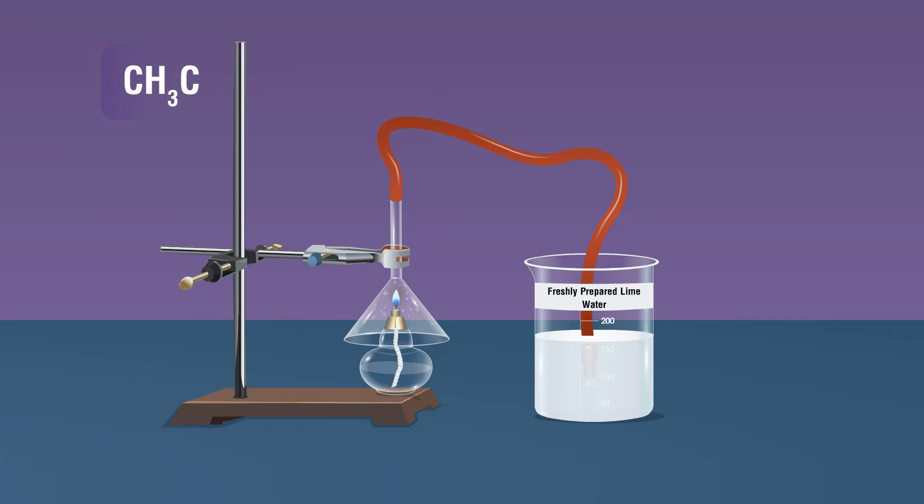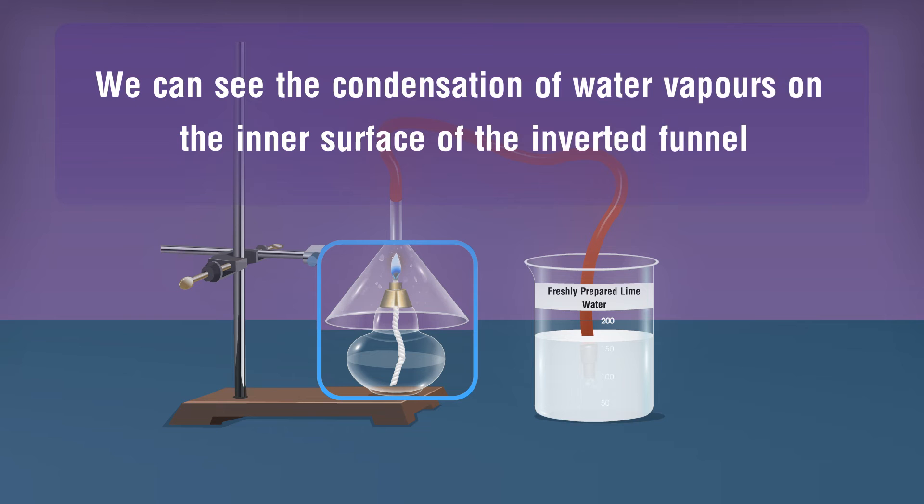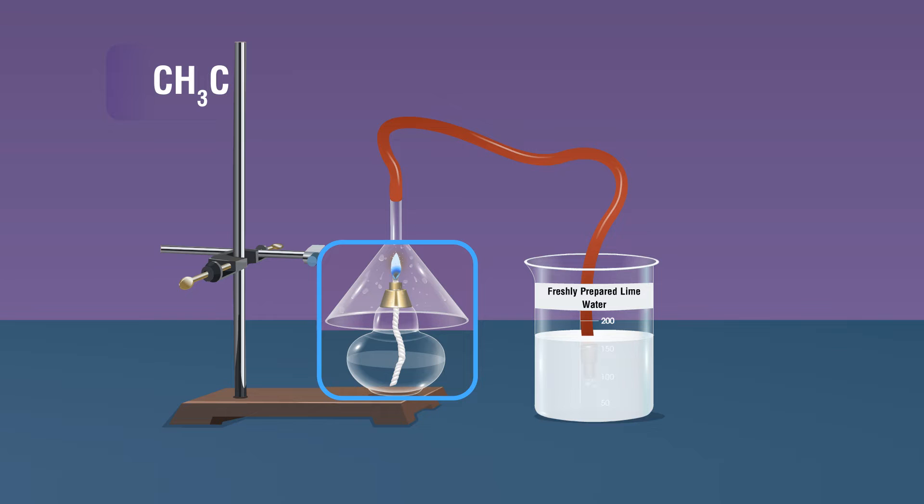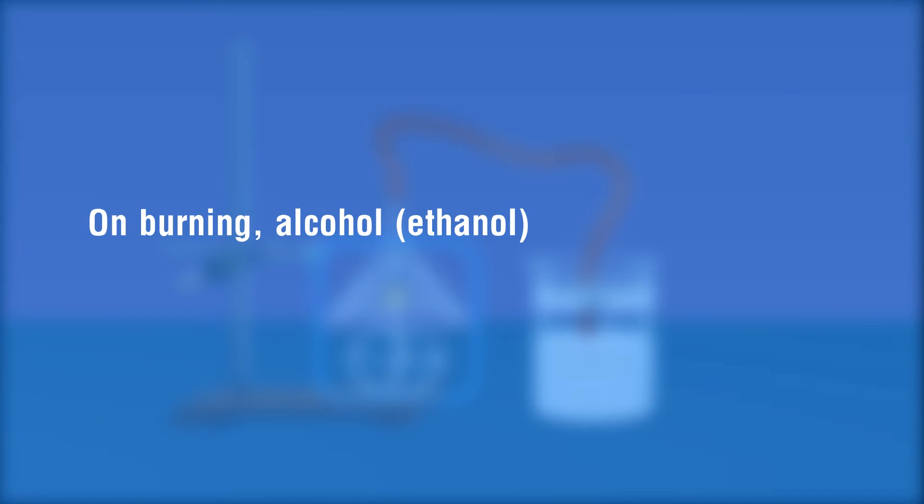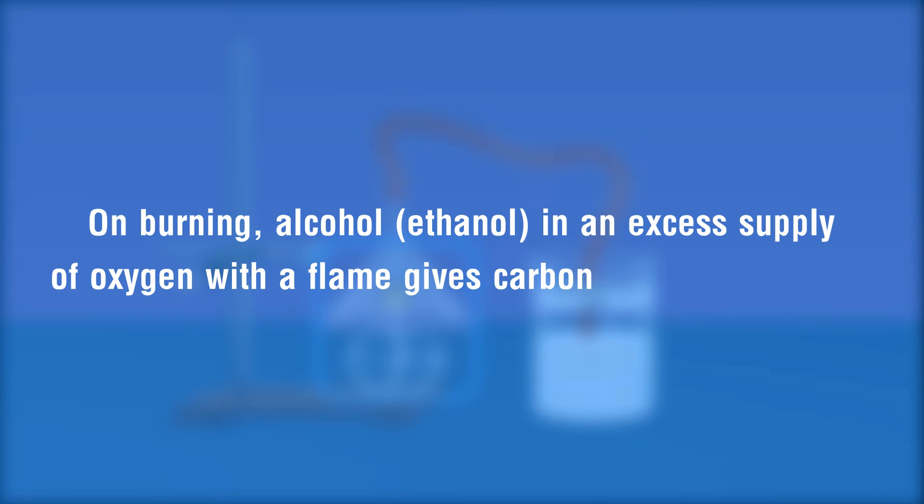CH3CH2OH plus 3O2 gives 2CO2 plus 3H2O. Observation 2: We can see the condensation of water vapors on the inner surface of the inverted funnel. On burning alcohol ethanol in an excess supply of oxygen with a flame gives carbon dioxide and water.